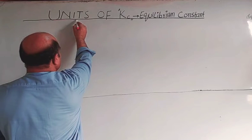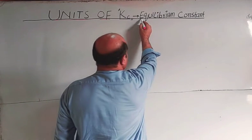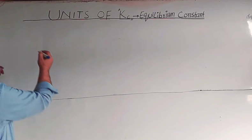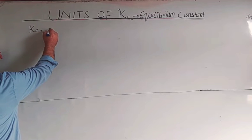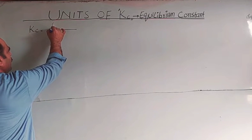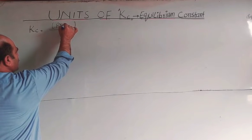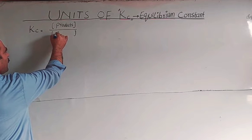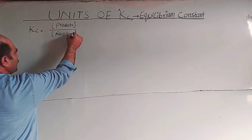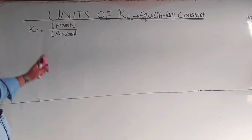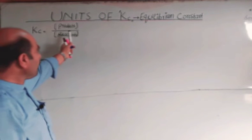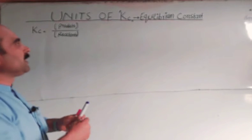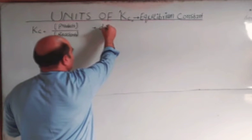The heading is: what are the units of Kc? Kc is called the equilibrium constant. As we know, the equilibrium constant Kc is the ratio of concentration of products to the concentration of reactants. In general form, the unit of Kc depends on the number of moles of products and number of moles of reactants.